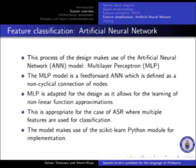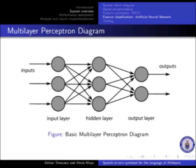The final stage is feature classification. This stage makes use of the artificial neural network model — multilayer perceptron (MLP). The MLP model is a feed-forward ANN, defined as a non-cyclical connection of nodes. MLP is adapted for this design as it allows for the learning of non-linear function approximations, which is appropriate for ASR, where multiple features are used for classification.